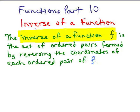We're going to begin with the definition of the inverse of a function. The inverse of a function f is the set of ordered pairs formed by reversing the coordinates of each ordered pair of f. Remember, this letter f is not a variable — it stands for the name of a function.